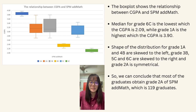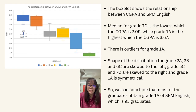The box plot shows the relationship between CGPA and SPM MS. The median for grade 6C is the lowest at CGPA 2.09, while grade 1A is the highest at 3.90. The distribution for grades 1A and 4B are skewed to the left, grades 3B, 5C, and 6C are skewed to the right, and grade 2A is symmetrical. We can conclude that most graduates obtained grade 2A for SPM MS, which is 119 graduates. The box plot for CGPA and SPM English shows the median for grade 7D is the lowest at CGPA 2.09, while grade 1A is the highest at 3.67. There are outliers for grade 1A. Grades 2A, 3B, and 6C are skewed to the left, grades 5C and 7D are skewed to the right, and grade 1A is symmetrical. Most graduates obtained grade 1A for SPM English, which is 93 graduates.